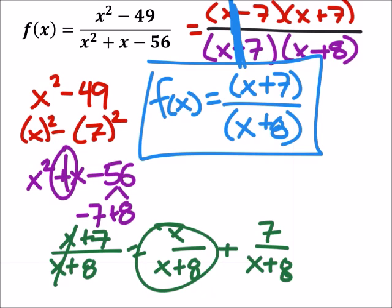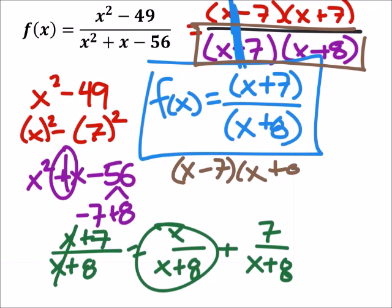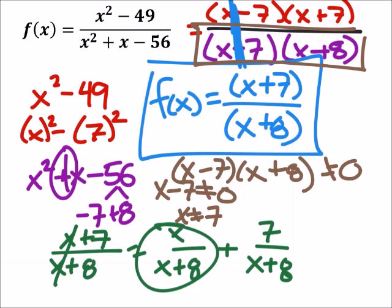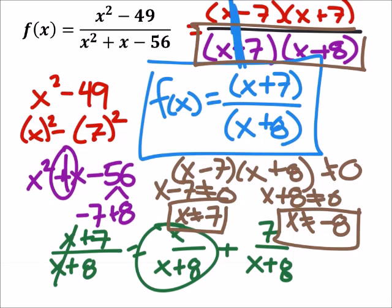Now if we look back to when we factored, because now we're looking at restrictions on the domain. We did have an x minus 7 times an x plus 8. And this can't equal 0. So we kind of split this up. If x minus 7 equals 0, then it's a restriction on the domain. So this tells us that x cannot be 7. And then x plus 8, if that were 0, it would still make the denominator 0. So x plus 8 also cannot equal 0. Meaning x cannot equal negative 8.